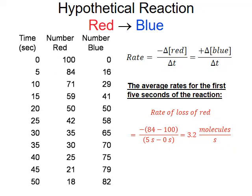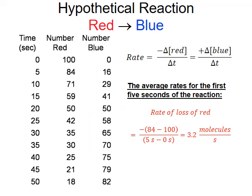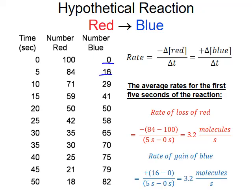We can do the same thing for the rate of gain for blue over the first five seconds. The change in blue is from zero to 16, so 16 minus 0 divided by 5 minus 0 seconds, giving us the same rate of gain of 3.2 molecules per second. We have the same rate of loss for red and gain for blue because they have a one-to-one ratio in the chemical reaction, though that's not necessarily the case for every reaction.